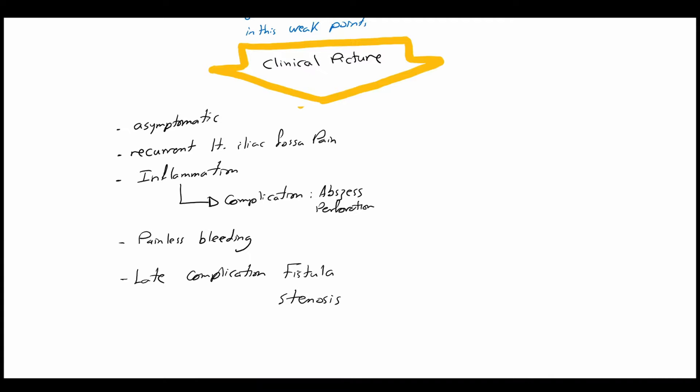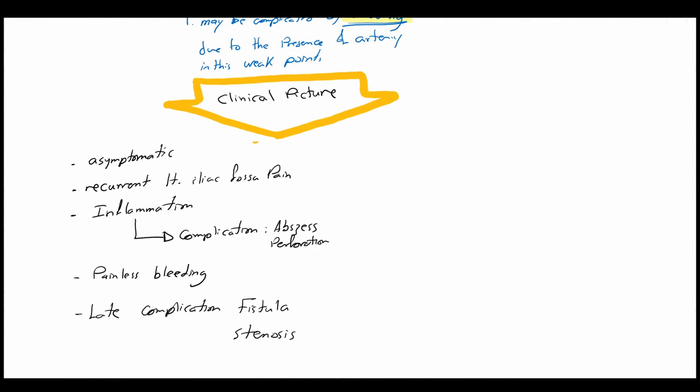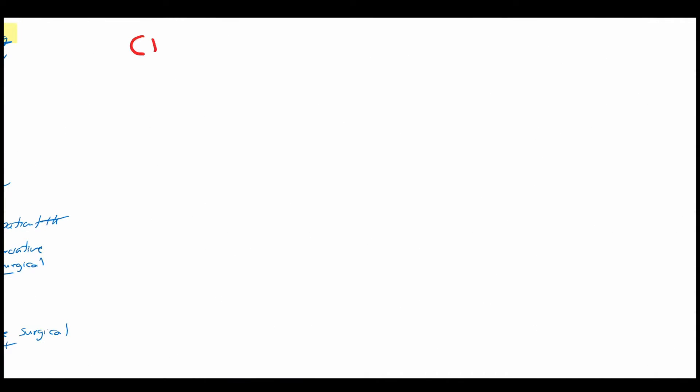General rules of treatment: asymptomatic cases need no treatment. Recurrent pain needs only follow-up in outpatient phases. Inflammation and bleeding need inpatient treatment, conservative or surgical. Late complications may need elective surgical treatment. Here we will discuss the colonic diverticular disease classification and treatment according to the recent German guidelines.